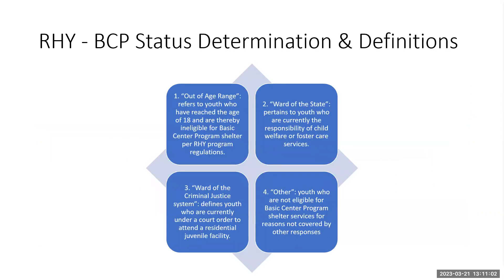Determination definitions: if the determination is out of range, it refers to a youth who has reached the age of 18 and is thereby ineligible for basic center program shelter under RHY programs. If they are awarded to the state, it pertains to youth who are currently the responsibility of a child welfare or foster care system. If they are under the criminal justice system — under court order or at a residential juvenile facility — that applies as well. And there is an other category for youth who are not eligible for reasons not covered by the first three.